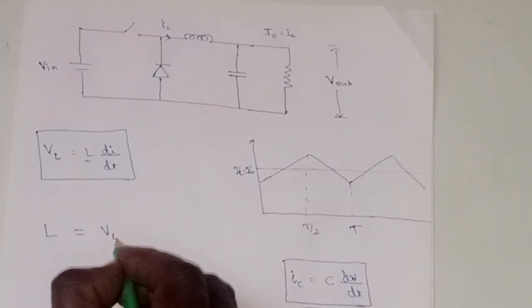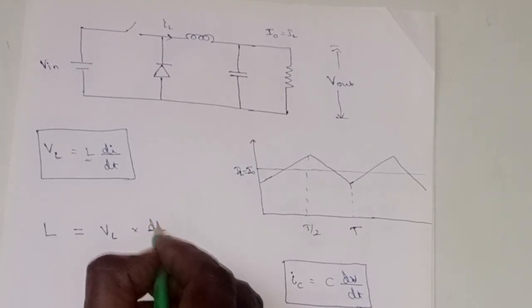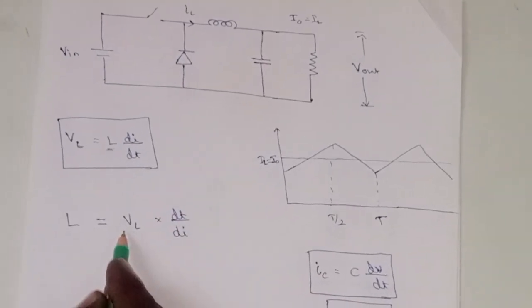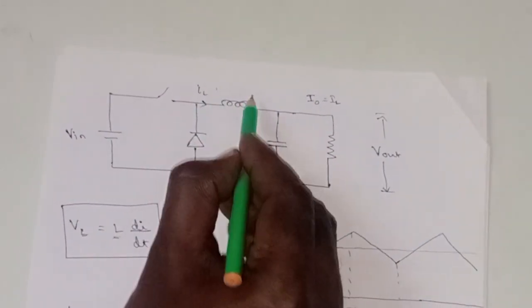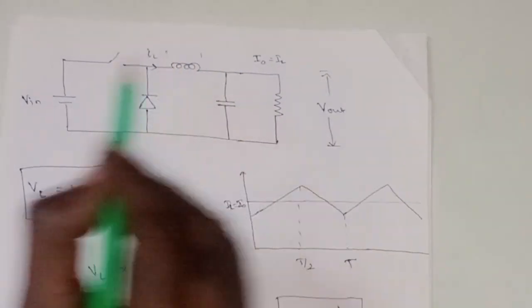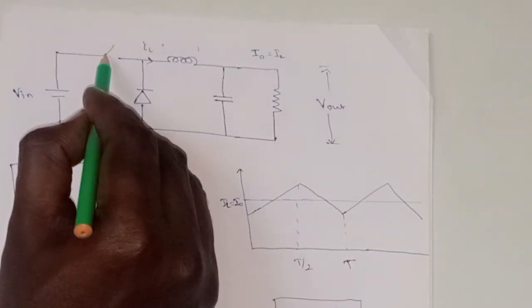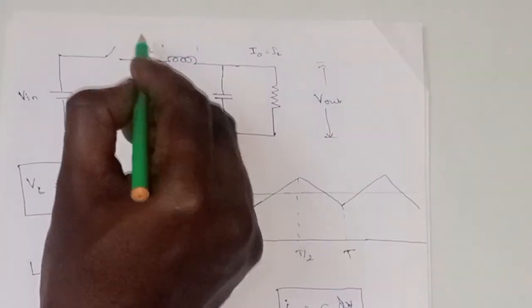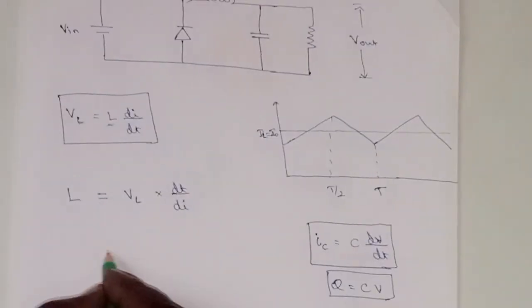Voltage across the inductor into dt by di. Now, the voltage across the inductor VL, what does it mean? Voltage across the inductor - how much voltage will appear across here. And we can say that during on time, when the switch is turned on, the voltage appearing here will be VIN minus VOUT.